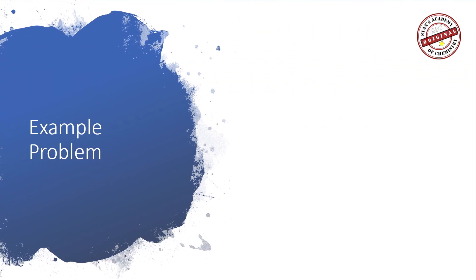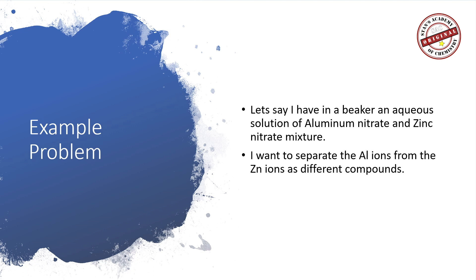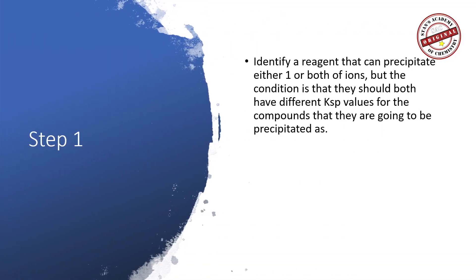Here is an example problem. Let's say I have a beaker of aqueous solution containing aluminum nitrate and zinc nitrate. I want to separate the aluminum ions from the zinc ions as different compounds. To do this, we identify a reagent that can precipitate either one or both of the ions, with the condition that they have different KSP values for the compounds formed.